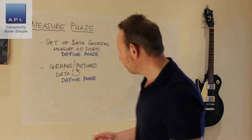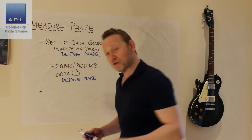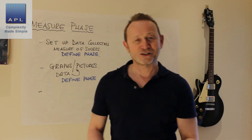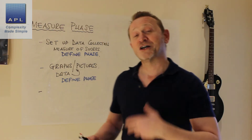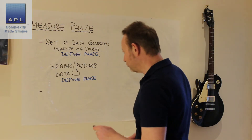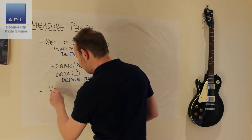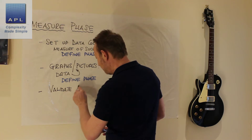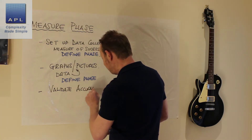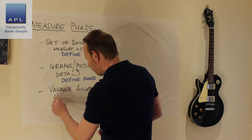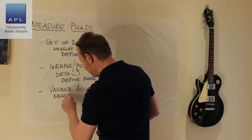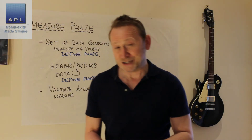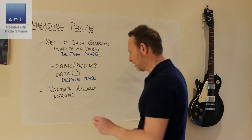Let's say you have the measure set up, it was already there, you already have the graphs — that's how the problem was identified in the first place. One of the things you need to do now is to validate the accuracy of the measure.